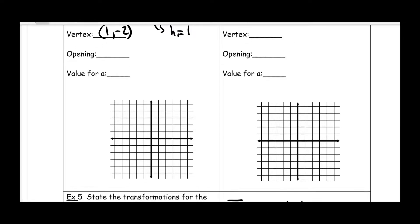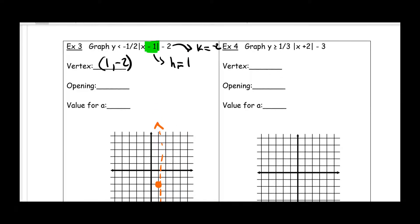We put those two values together — one and negative two — and that is going to be our vertex. I'm going to go down and find that spot, one, negative two. I'll switch colors so you can see it better. I'll put a dot right there and draw the axis of symmetry to show symmetry. The opening is going to be up or down. The A value is negative one half, which means I'm going to open down. Our two slopes will be negative one half and positive one half.